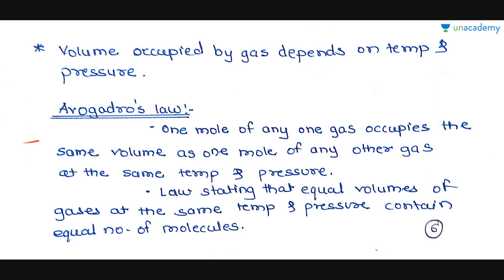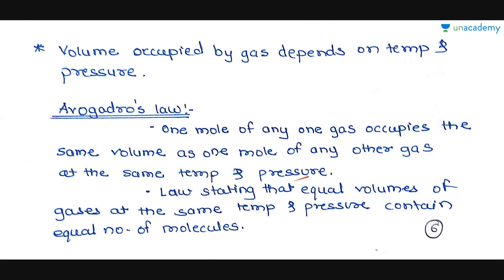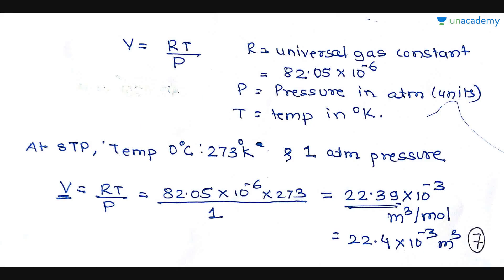Avogadro's law states that one mole of any gas occupies the same volume as one mole of any other gas at the same temperature and pressure. Equivalently, equal volumes of gases at the same temperature and pressure contain equal numbers of molecules. According to that law, V = RT/P.